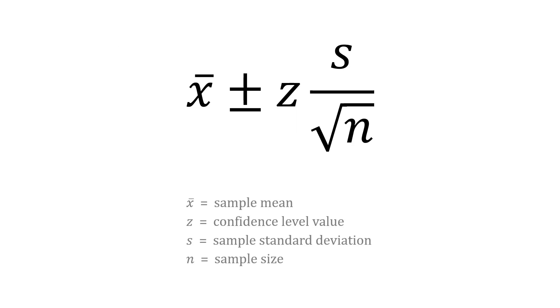Here is the calculation we're going to use for our confidence interval. We're going to say our sample mean plus or minus our confidence level value, and then we're going to multiply that by our sample standard deviation divided by the square root of the sample size, or our standard error.